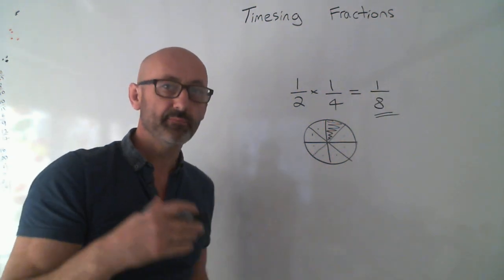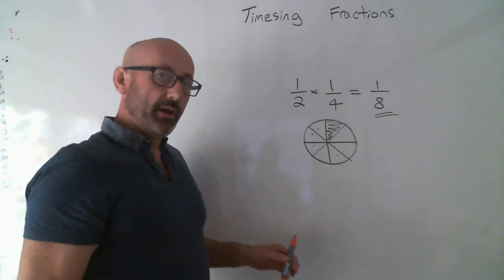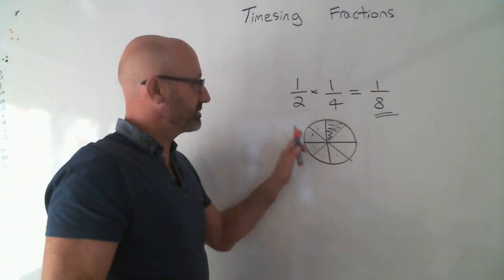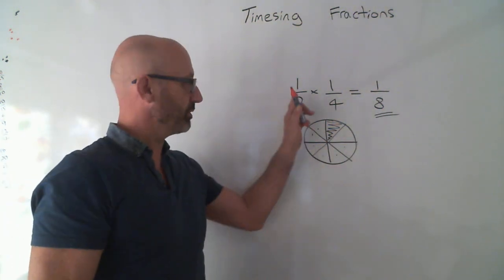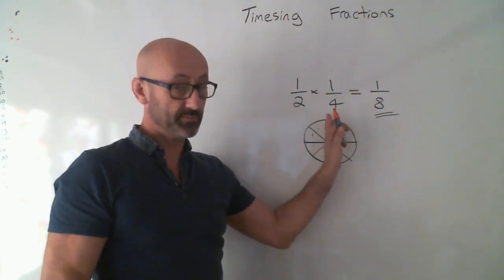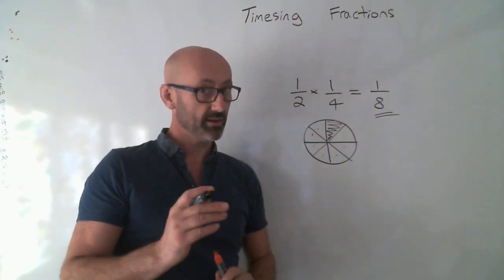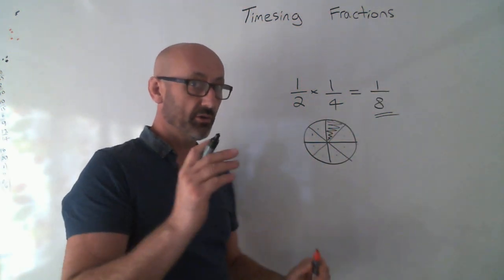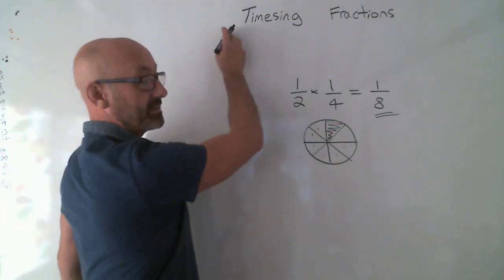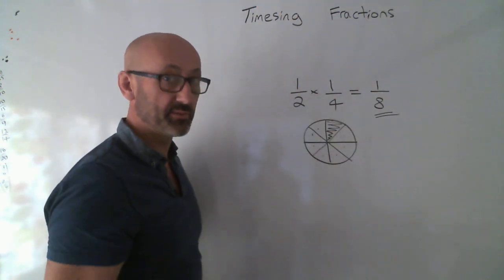So a very simple rule. You times the tops, you times the bottoms. 1 times 1 is 1, 2 times 4 is 8. You times the tops, you times the bottoms. Right down under the heading, times the tops, times the bottoms.